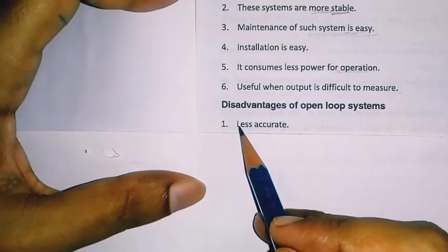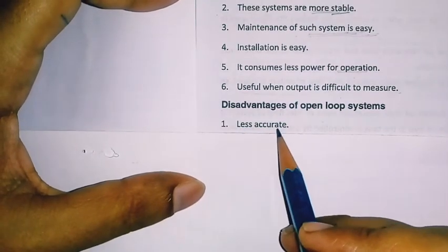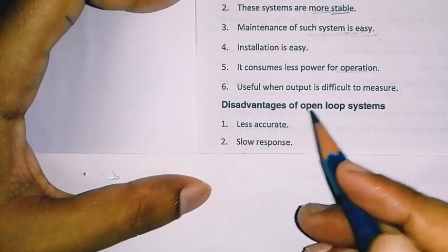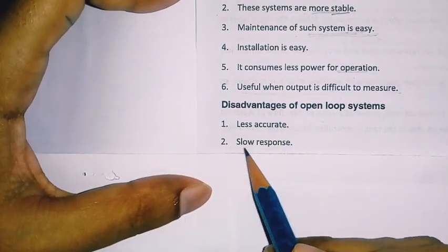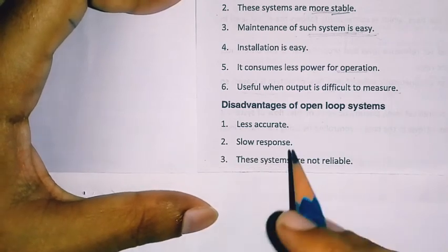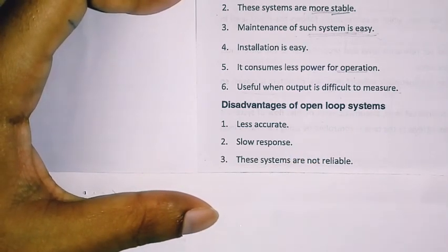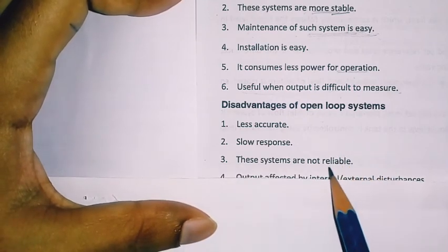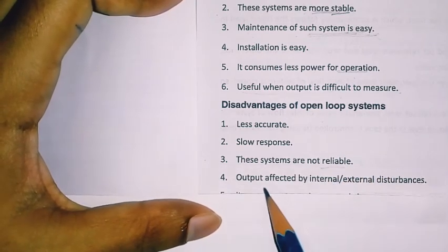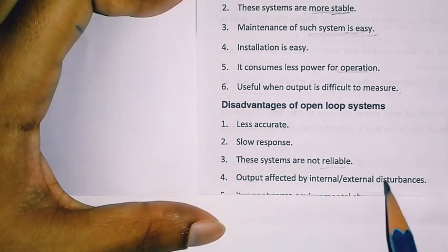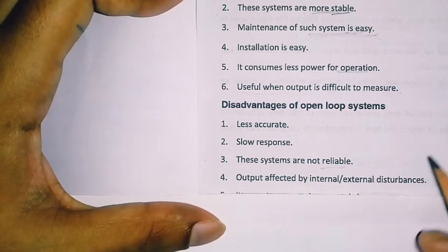Disadvantages of open loop system: first, accuracy is less. Second, response is slow. Third, these systems are not reliable. Fourth, the output is affected by internal and external disturbances.